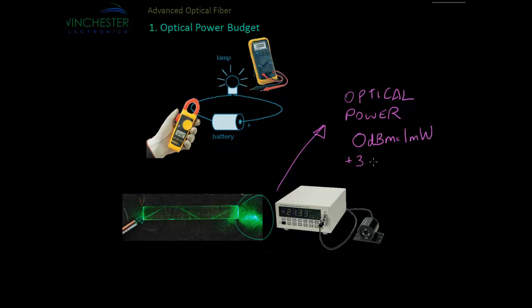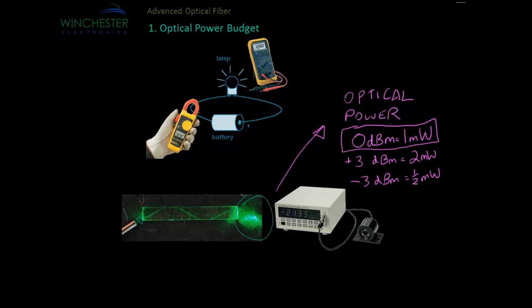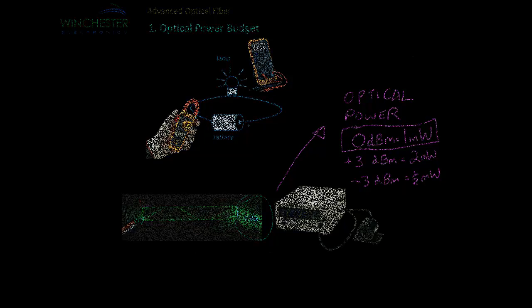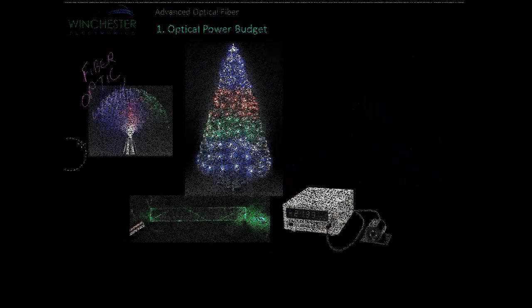Every 3 dB you add, you double the power. And all optical links behave in this way, where we have a transmitter at one end and we have a receiver at the other end. In the early days of fibre, many different types of products were developed: lamps, fibre optic Christmas trees, even fibre optic clothing.